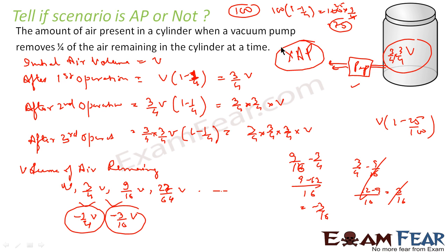To summarize: initial volume is V, after the first operation it is 3/4 V, after the second it is (3/4)² V, and after the third it is (3/4)³ V. Since the differences are not the same, we conclude this is not an AP.